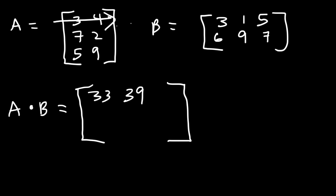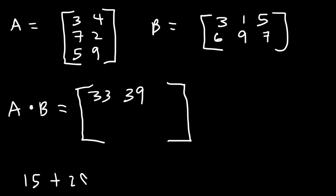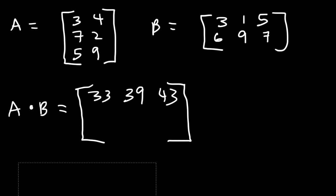Next let's multiply by the third column. So we have 3 times 5 which is 15, and then 4 times 7 which is 28. That adds up to 43, and it goes in the first row, third column.